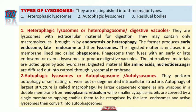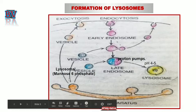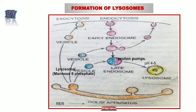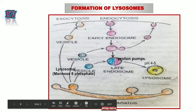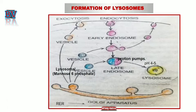Lysosomes are distinguished into three major types: heterophagic lysosomes, autophagic lysosomes, and residual bodies or tertiary lysosomes — which can also be called primary, secondary, and tertiary. Primary lysosomes are usually 0.5 mm in diameter, formed from the Golgi complex, and are not yet involved in the digestive process.